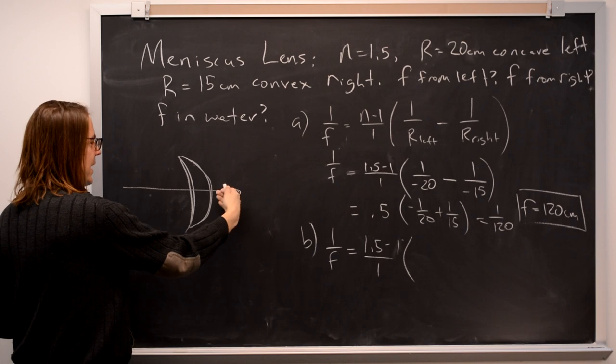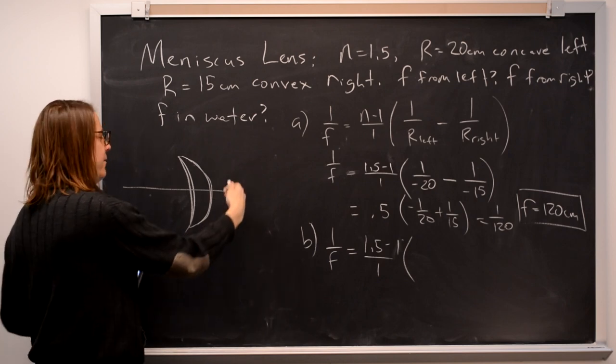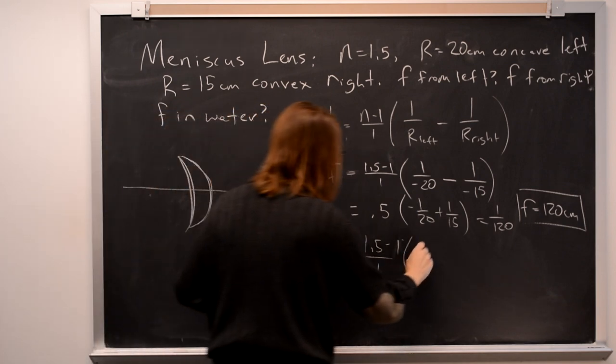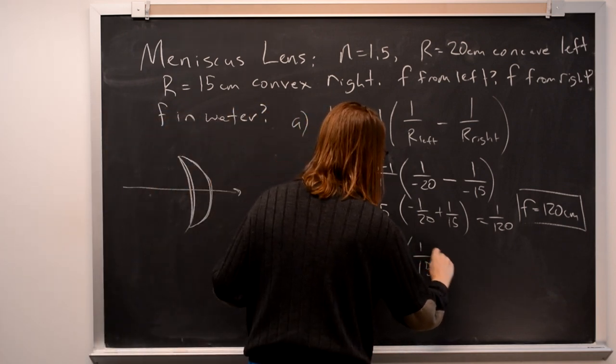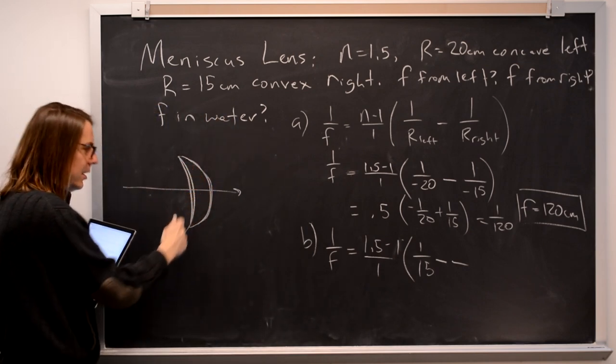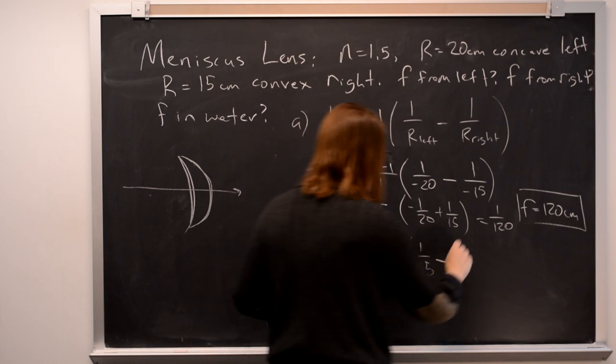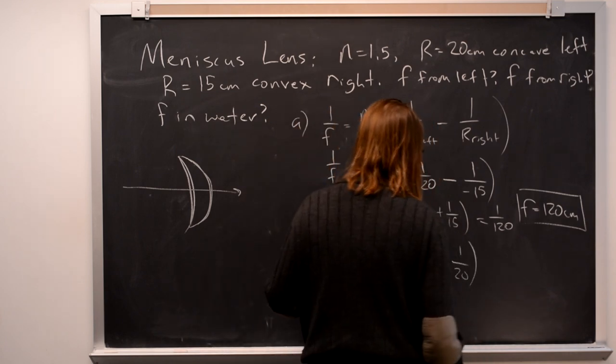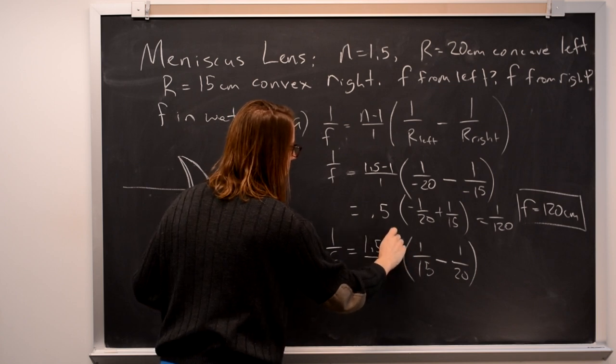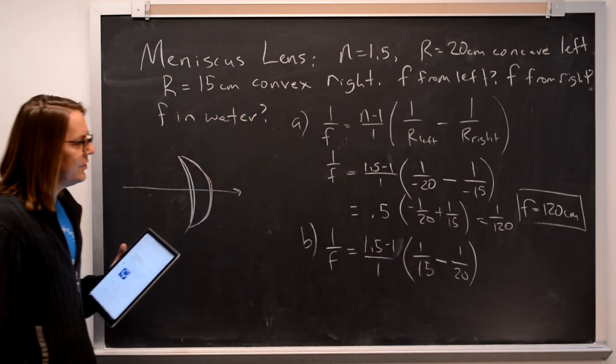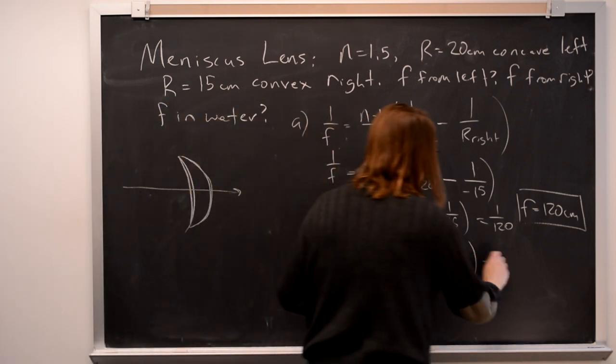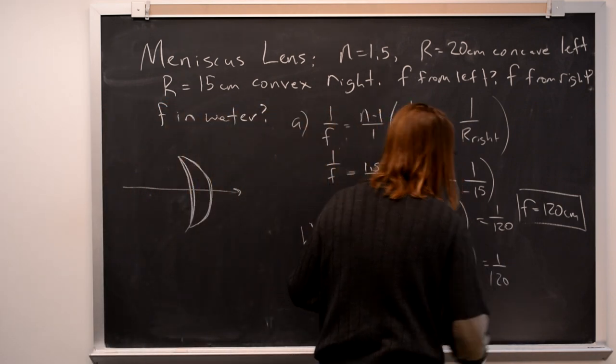Light sees that as convex, and your thumb sees it as convex when you feel it. That's 1 over 15. Light sees that also as convex: 1 over 20. And then mathematically, it's exactly like what we just did. 1 over 15 minus 1 over 20, common denominator of 60. 4 over 60 minus 3 over 60 is 1 over 60. This is a half. It's equal to 1 over 120. We get the same thing.